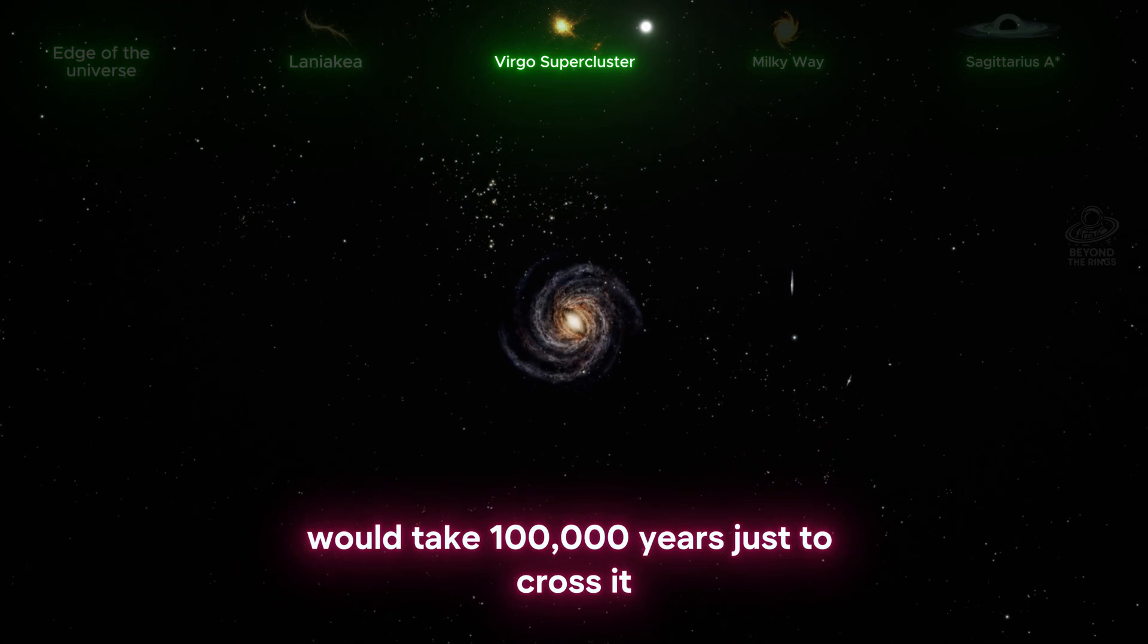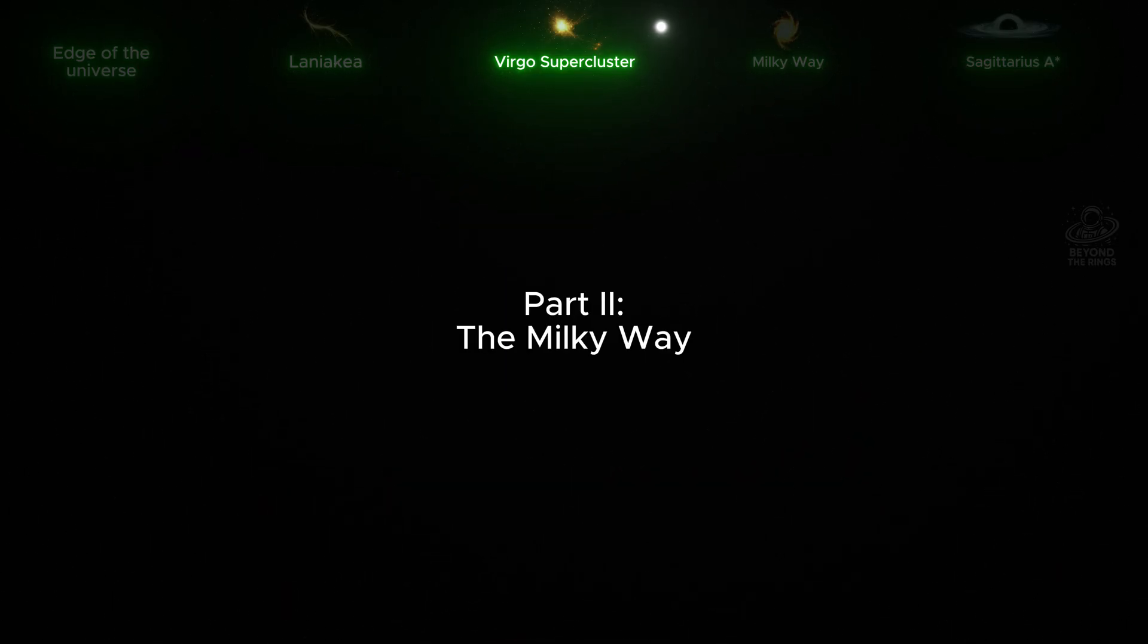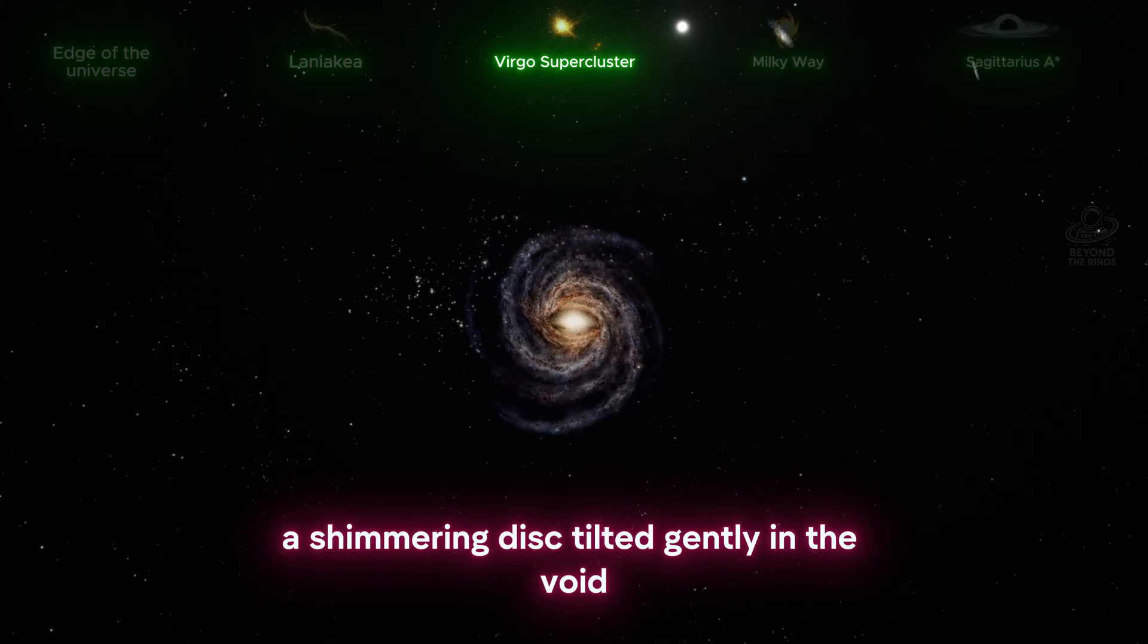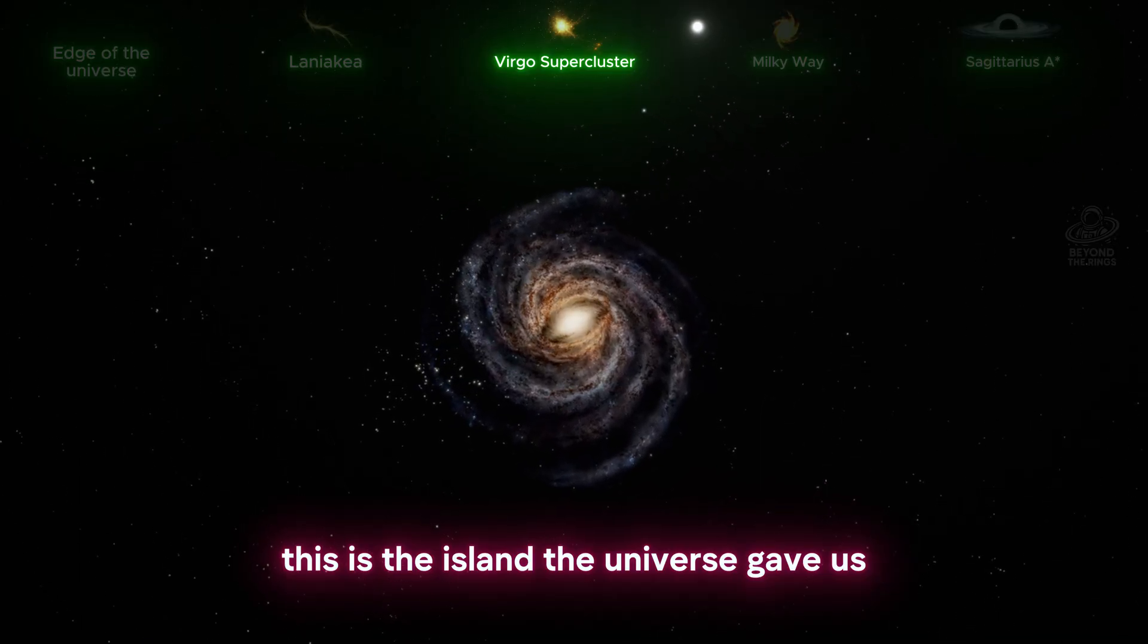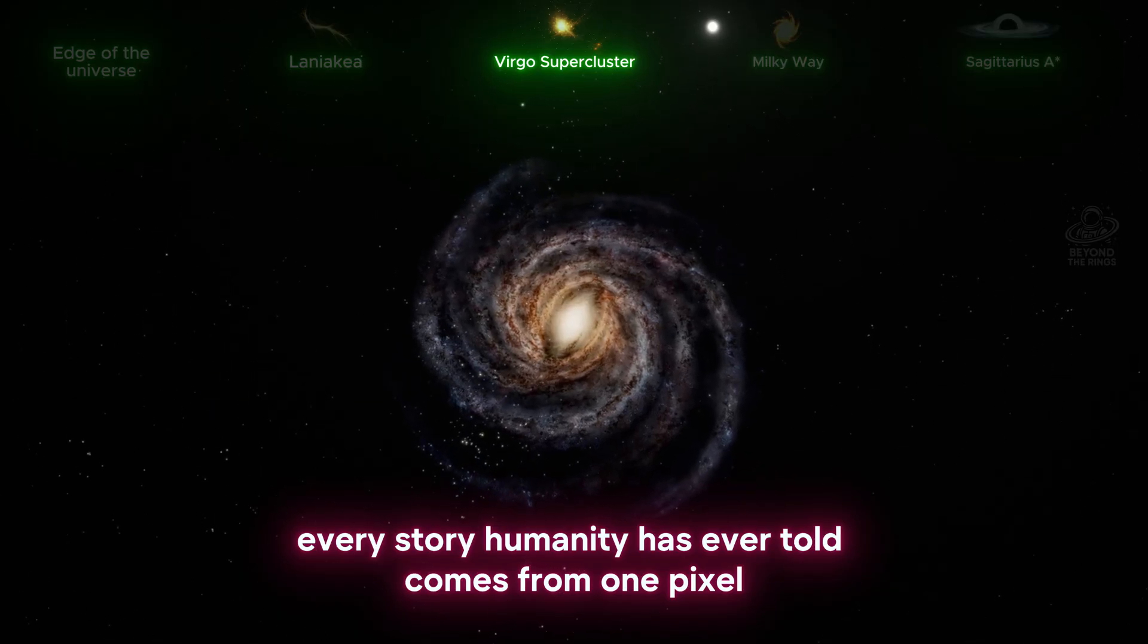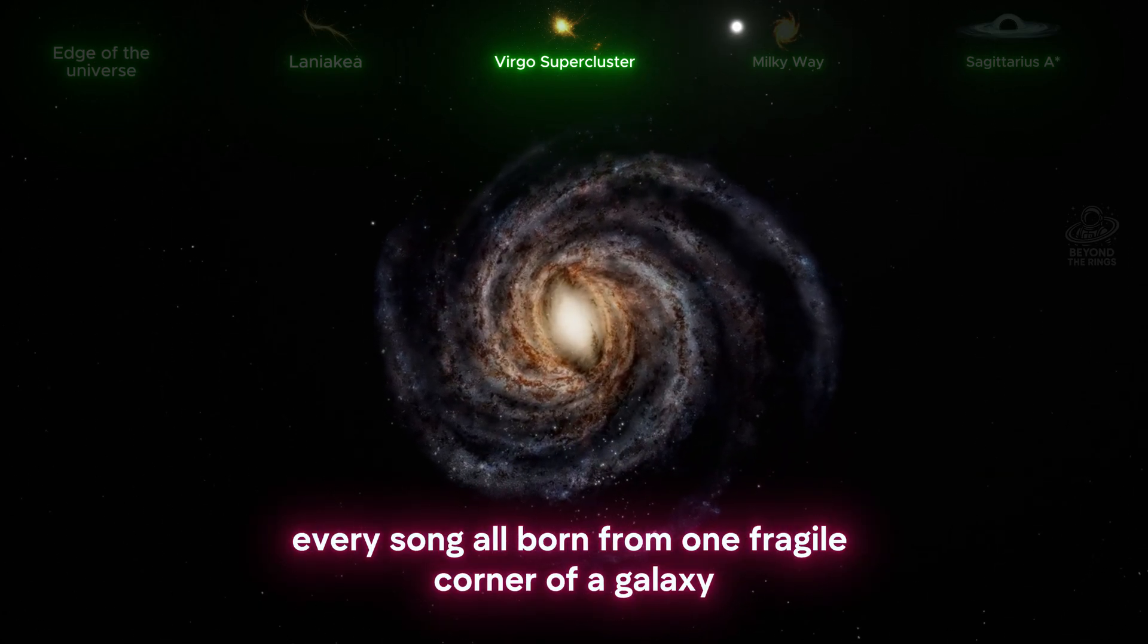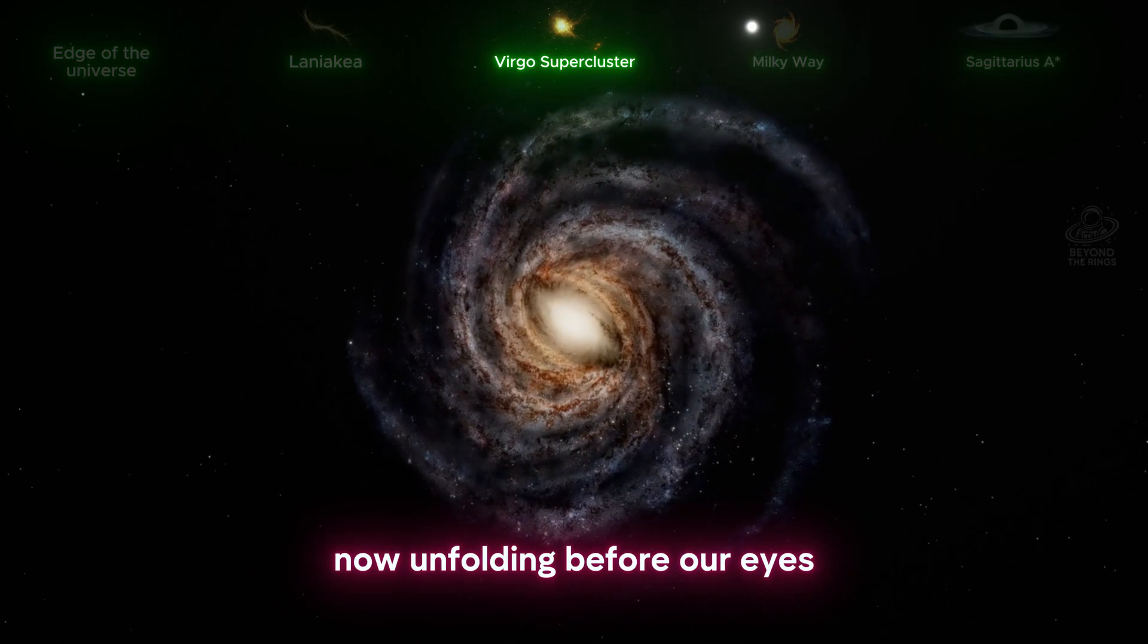Watch how it slowly expands before us, a shimmering disk tilted gently in the void like a coin made of stardust. This is the island the universe gave us. Every story humanity has ever told comes from one pixel in this vast spiral. Every dream, every life, every song - all born from one fragile corner of a galaxy now unfolding before our eyes.